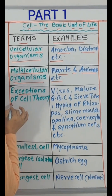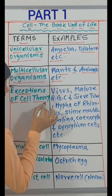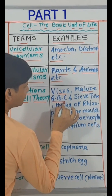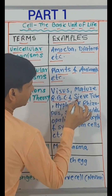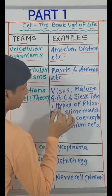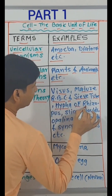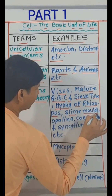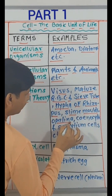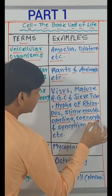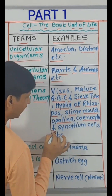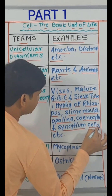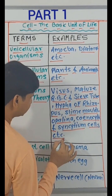Exceptions of cell theory: virus, mature RBC and coenocyte, hypha of Rhizopus, slime molds, Opalina, syncytia and sinusoidal cells, etc.